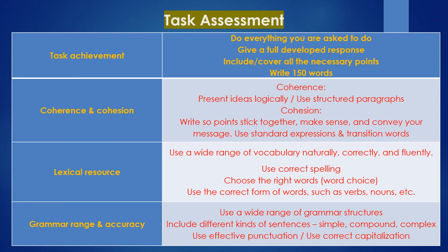Let's take a look at the task assessment. Task achievement is 25%, in which you need to answer everything you're asked to do in the question. The other 25% is coherence and cohesion — you need structured paragraphs and varied expressions. The other 25% is lexical resource: use a wide range of vocabulary. And the last is grammar range and accuracy: use a wide range of grammar structures including simple, compound, and complex sentences.